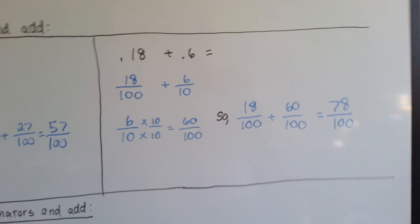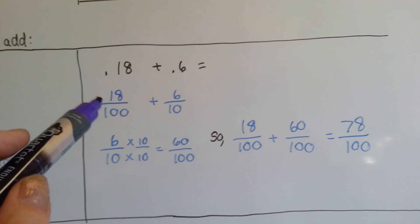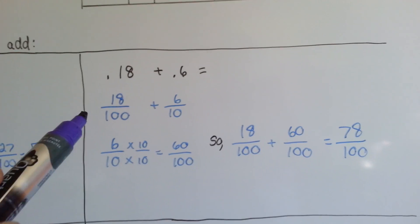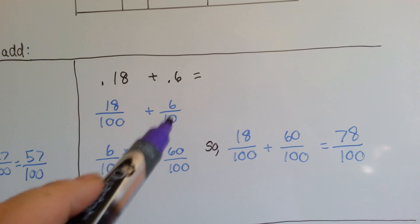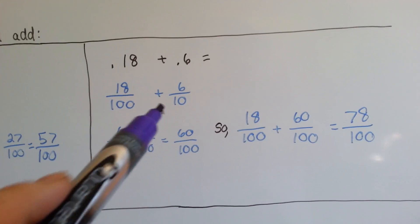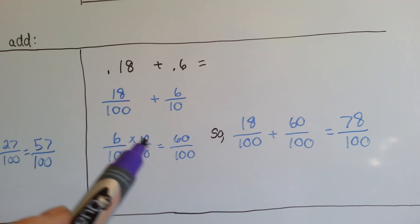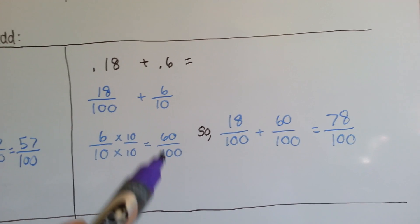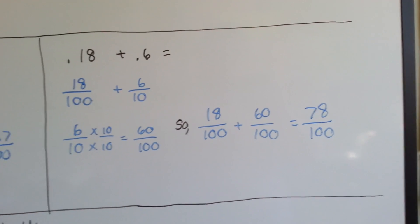We have 0.18 plus 0.6. This 0.18 is 18 one-hundredths — the eight is in the hundredths place. So 18 one-hundredths plus six-tenths: we need to have the denominators the same, so we change the six-tenths. For the 10 to become 100, it needs to be multiplied by 10. The numerator gets jealous, and the six wants to be multiplied by 10 also, so that's 60. Now we add 18 plus 60 and get 78 one-hundredths.